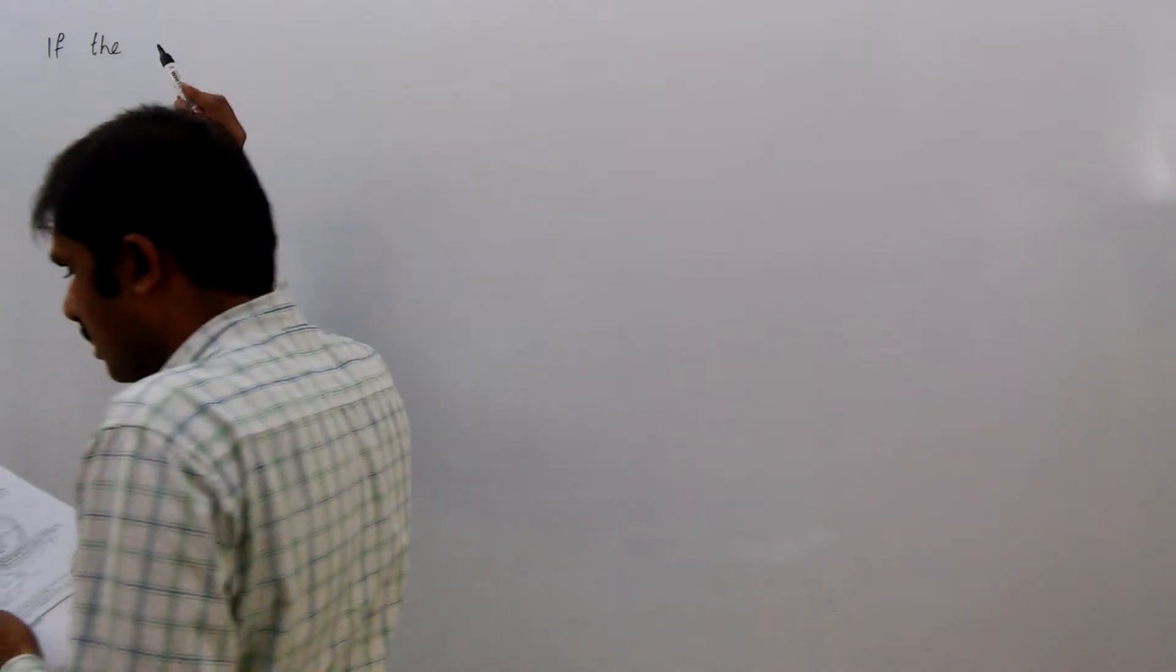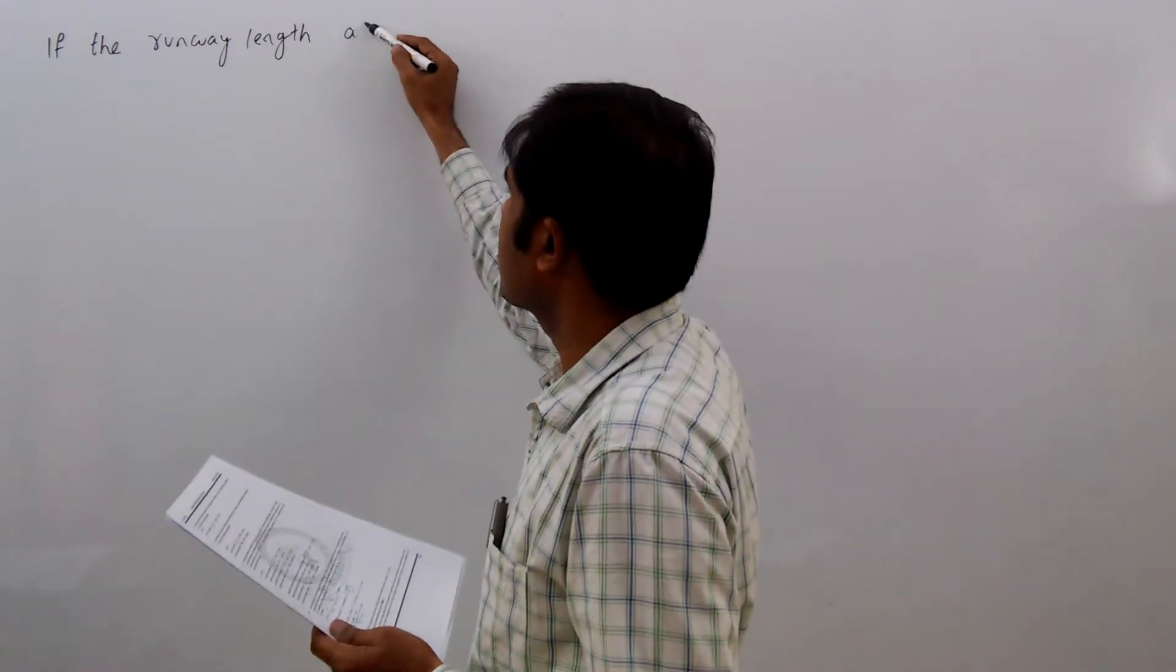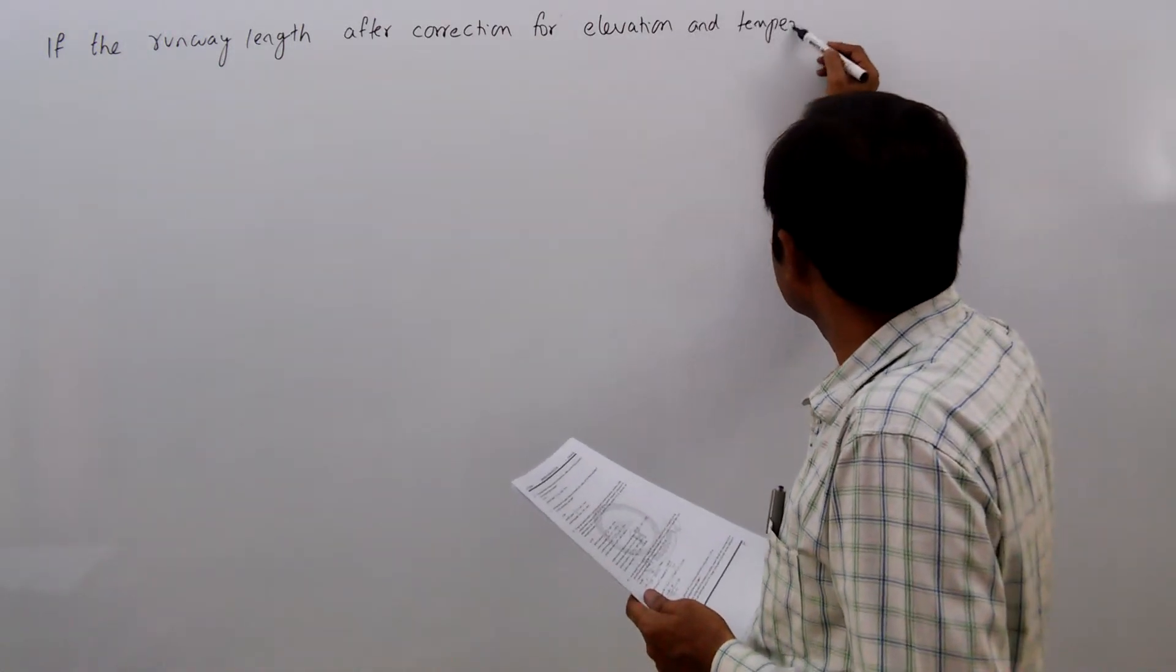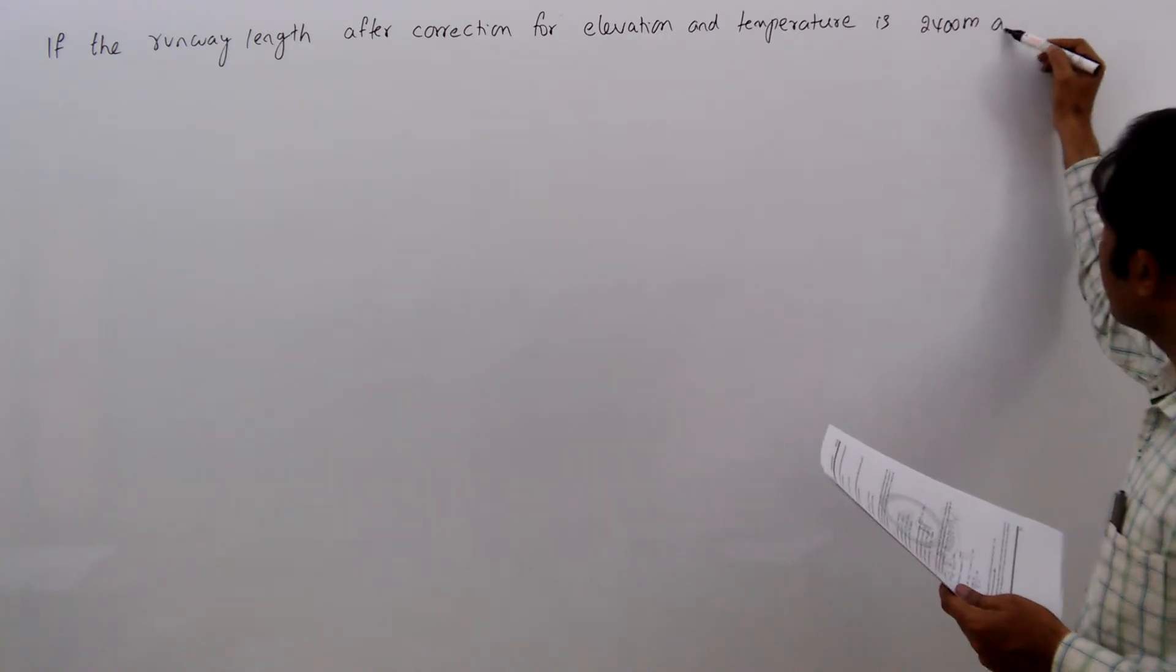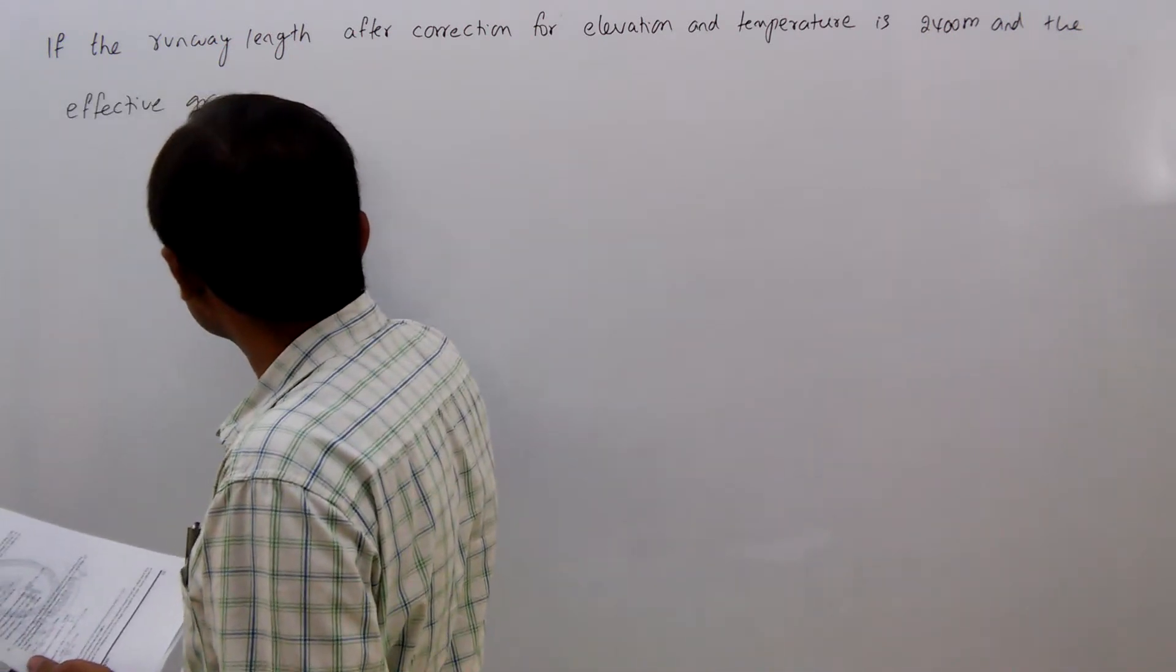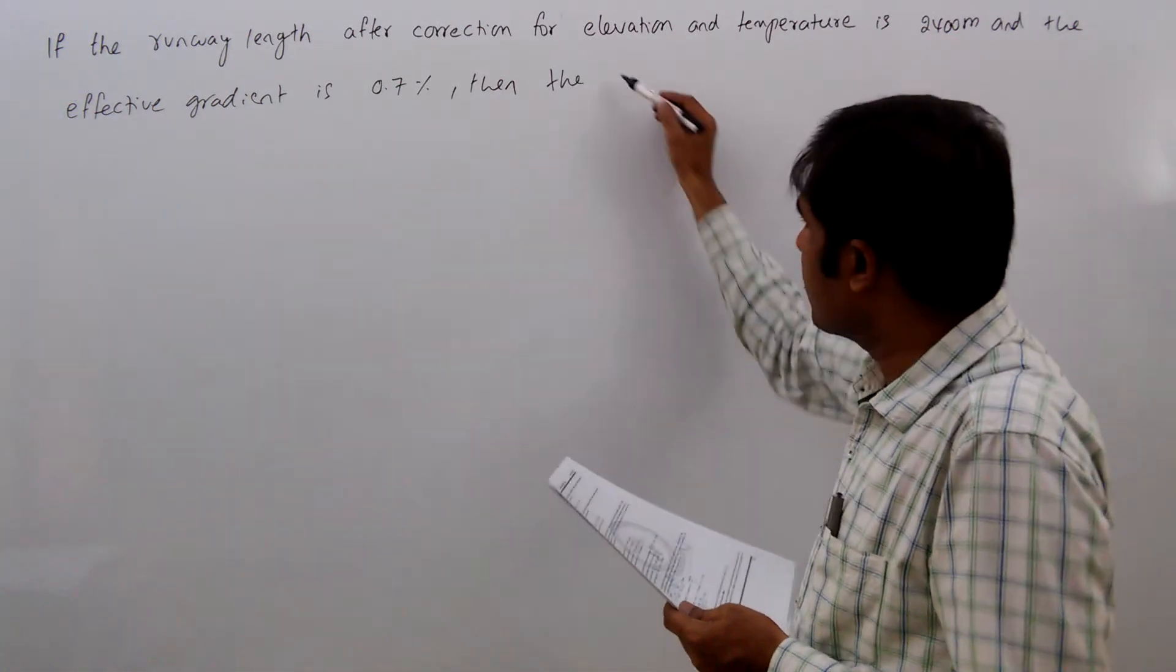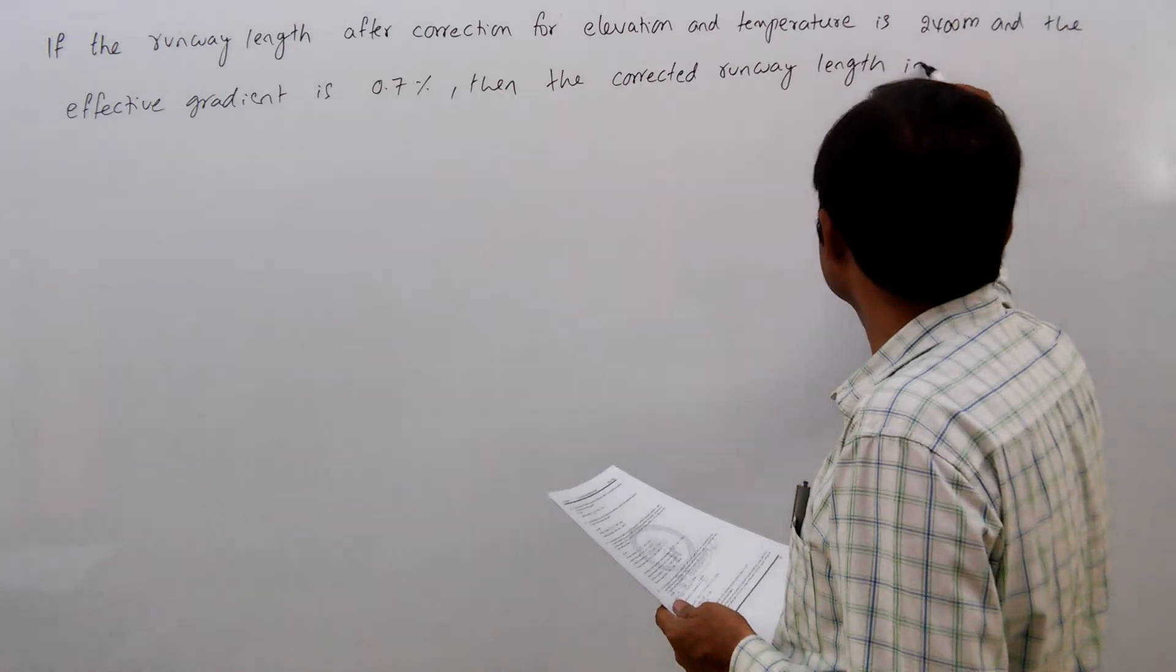If the runway length after correction for elevation and temperature is 2400 meters and the effective gradient is 0.7 percent, then the corrected runway length in meters is?